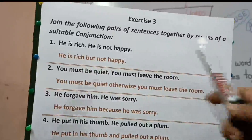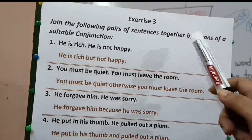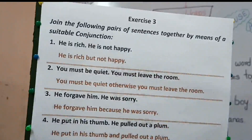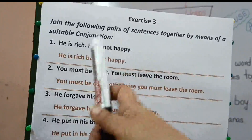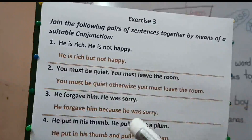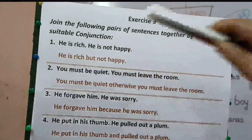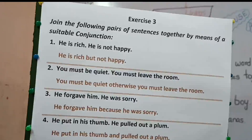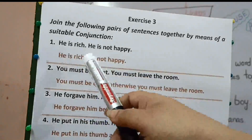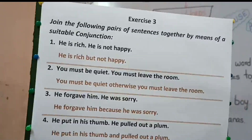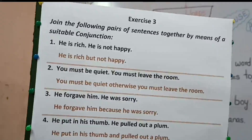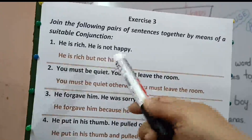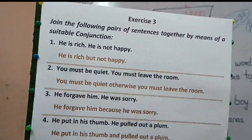Now students, come to exercise number three. That is: join the following pairs of sentences together by means of a suitable conjunction. There will be given two sentences and after the first sentence we have to put a suitable conjunction to shorten it. The first one: he is rich. He is not happy. Here one is positive and the other is negative, so when the contrast is given we will put 'but' in between. He is rich but not happy.